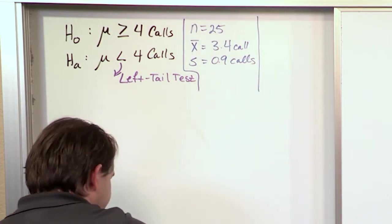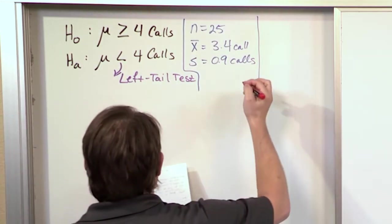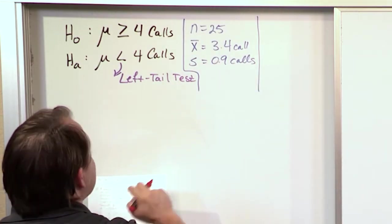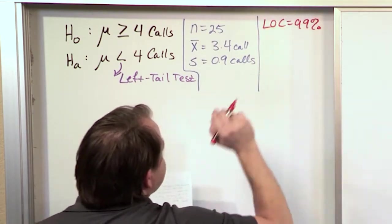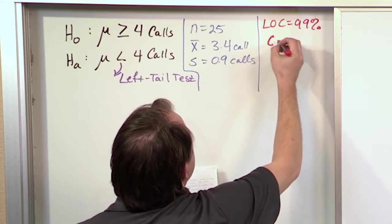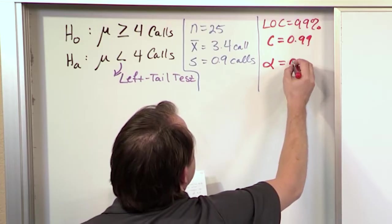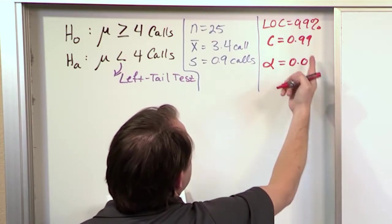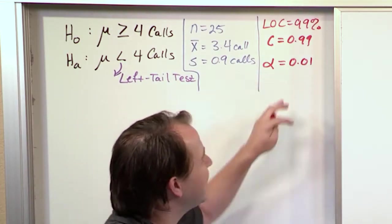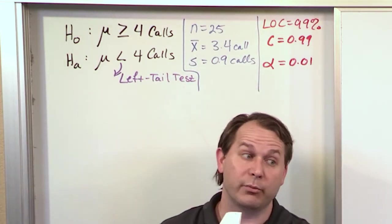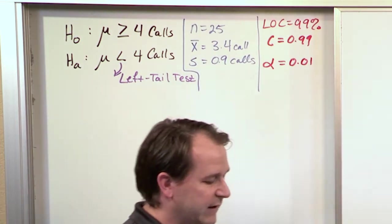The last data item from the problem: the claim is tested at a 99% level of confidence. So you write level of confidence = 99%, meaning C = 0.99. Because of that, alpha = 0.01, since 1 minus C gives alpha. These always add up to 1. Alpha is the level of significance — it's what we shade in our distribution.